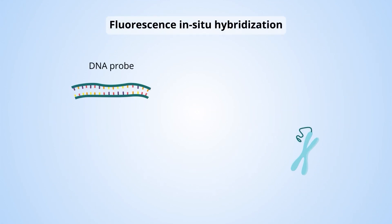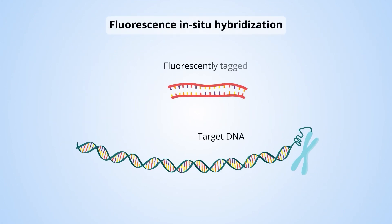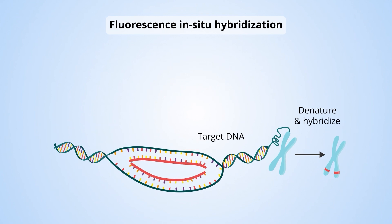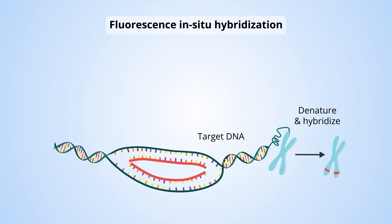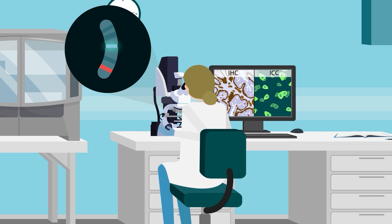Fluorescence in situ hybridization uses fluorescently tagged sequences of DNA or RNA that are complementary to specific regions of the genetic material of cells. The fluorescent probes are designed to bind to known genetic alterations, such as translocations, inversions, deletions, and duplications, so that they can be visualized in cells using a fluorescence microscope. Like with IHC and ICC, the resolution is low.